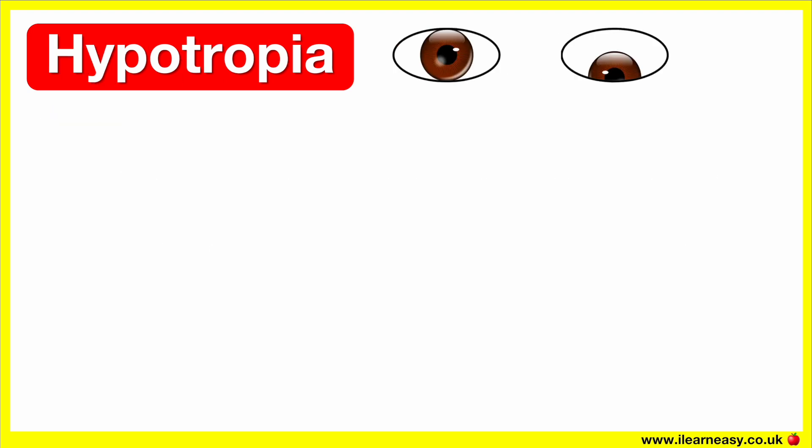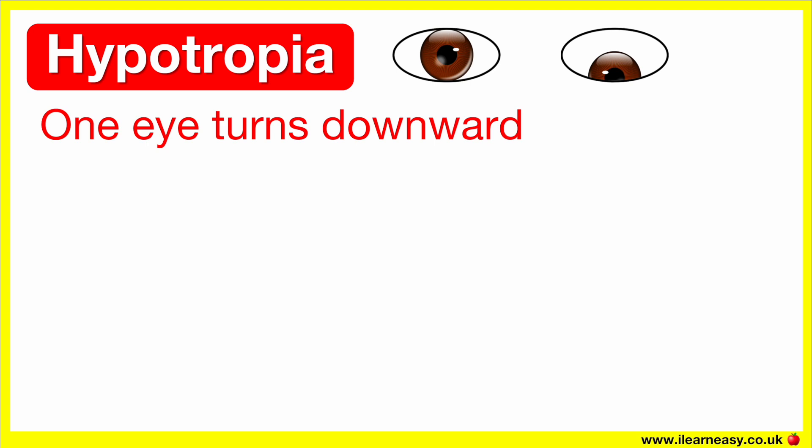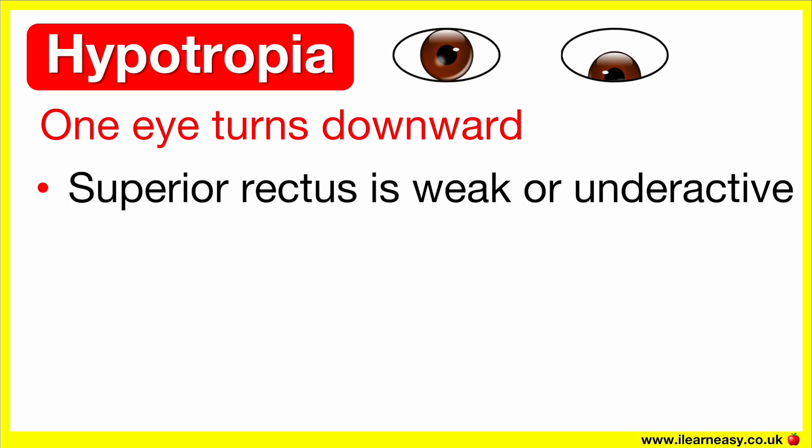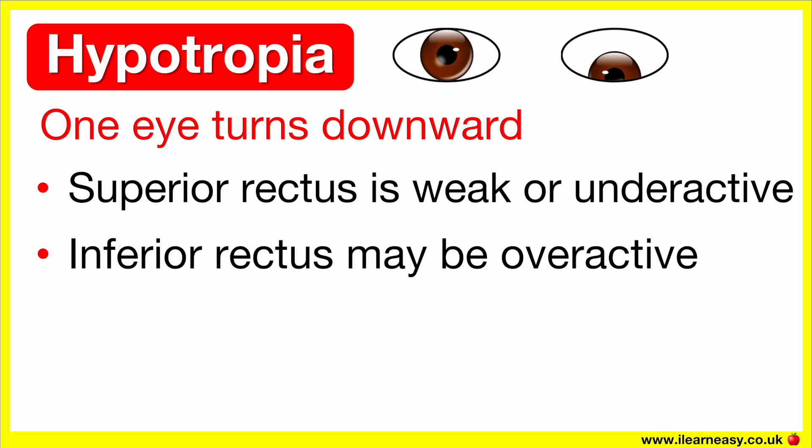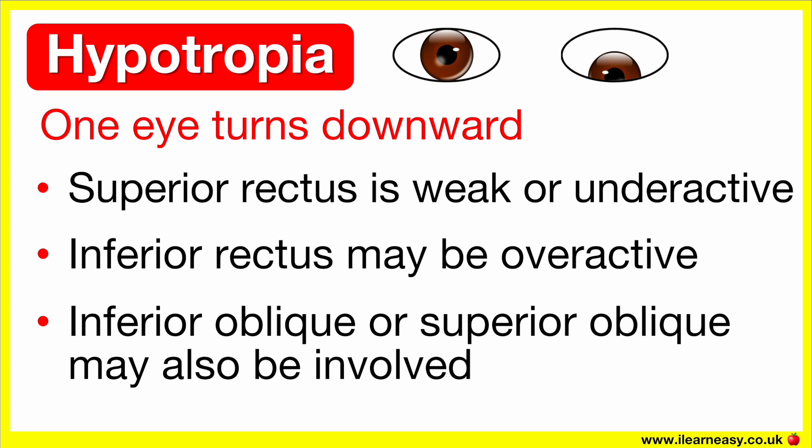Hypotropia is when one eye turns downward, so it is lower than the other eye. This is less common, but also causes vertical misalignment and vision problems. A hypotropia can occur when the superior rectus, which pulls the eye upwards, is weak or underactive, or when the inferior rectus, which pulls the eye downwards, is overactive. The inferior oblique or superior oblique may also be involved, and as a result, the eye drifts downwards.